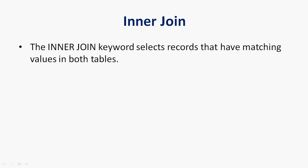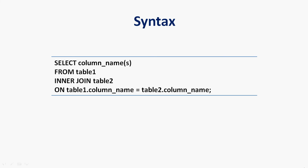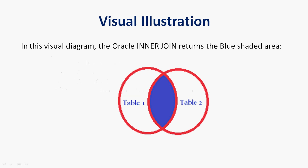Now we will see what inner join is and how to implement it with examples. The inner join keyword selects records that have matching values in both tables. The syntax is: SELECT columns FROM table1 INNER JOIN table2 ON table1.column_name = table2.column_name. Here we can also see a visual illustration of the inner join.